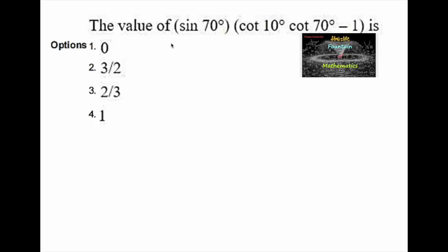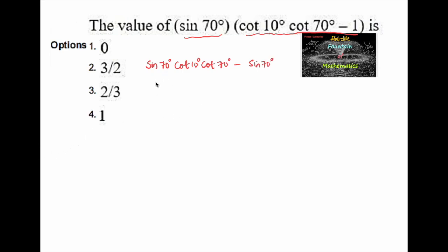We need to find the value of sine 70 degrees times cot 10 degrees times cot 70 degrees minus 1. Let us simplify this: sine 70 degrees into cot 10 degrees into cot 70 degrees minus sine 70 degrees.